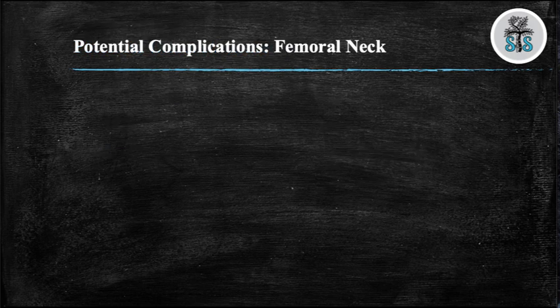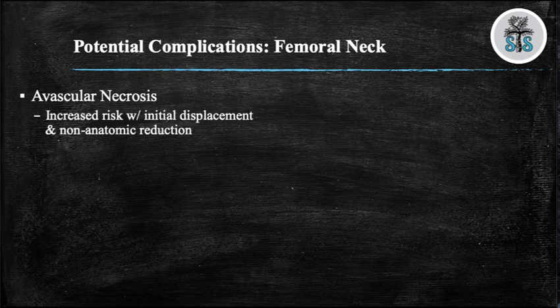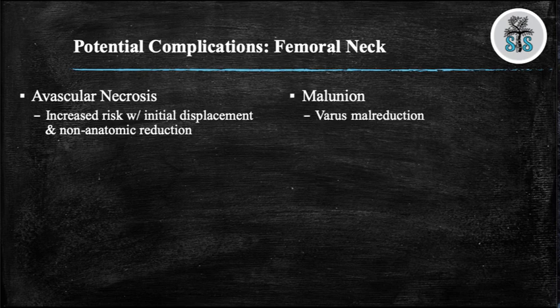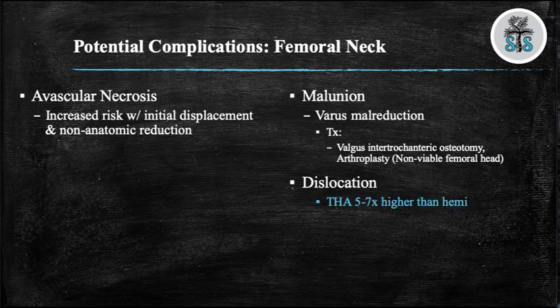We will now talk about the various complications that can occur when treating femoral neck fractures. Avascular necrosis or AVN is increased with initial displacement and non-anatomical reduction — this fracture is intracapsular and has poor blood supply. Another complication is malunion, with the most common being varus; this can be treated with a valgus intertrochanteric osteotomy or arthroplasty. Dislocations can occur — with total hip arthroplasty, the risk is five to seven times higher than hemiarthroplasty.